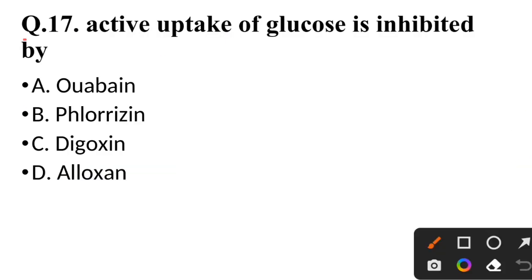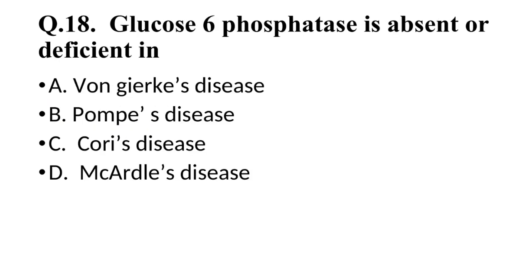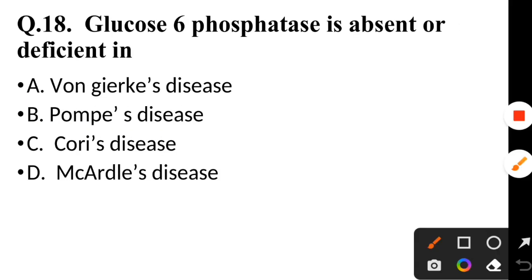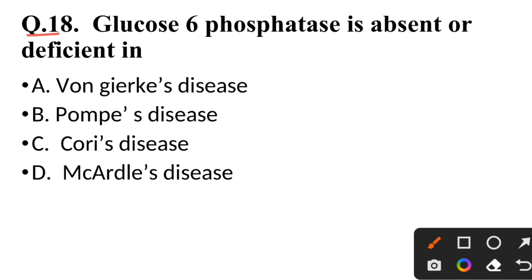Question 17: Active uptake of glucose is inhibited by — correct answer is phlorizin. Question 18: Glucose-6-phosphatase is absent or deficient in — correct answer is Von Gierke's disease.